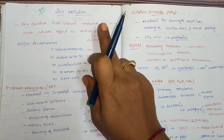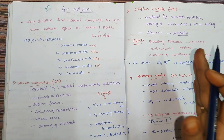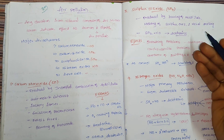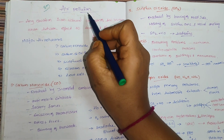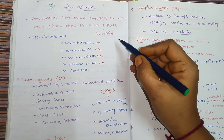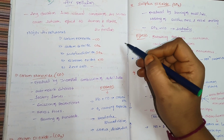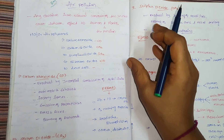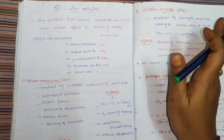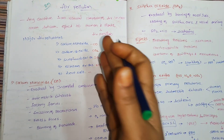Air pollution is an important question. In the environment we have different types of gases. Pollution means undesirable changes in the environment. For example, we have different types of gases: oxygen, carbon dioxide, nitrogen, sulfur, phosphorus, lead, and different types of elements. In the desirable content it is okay, but undesirable changes in the environment lead to pollution.